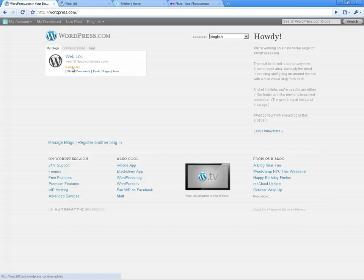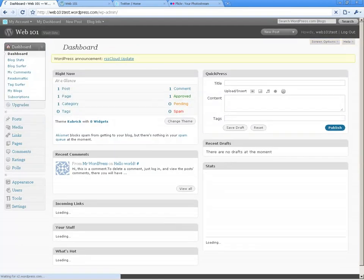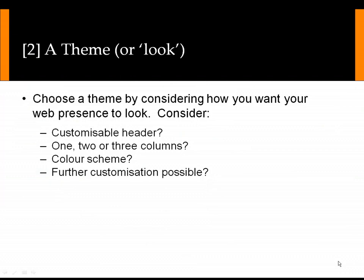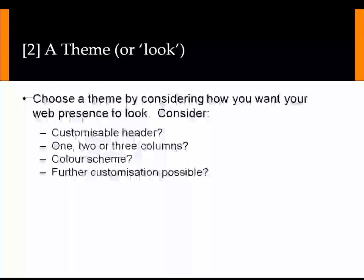Okay, let's go to our dashboard. We've done the sign-up process and we're now going to move to the next step: thinking about the theme or look of our WordPress blog. We're going to consider a number of things. First of all we might think about whether the header is customizable — can we change it to become a photograph or a picture? Can we change the colors?